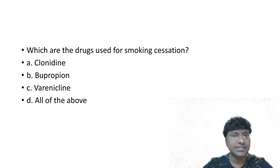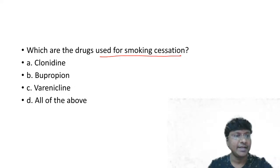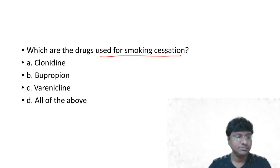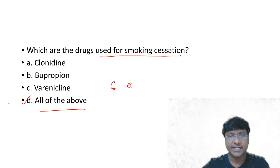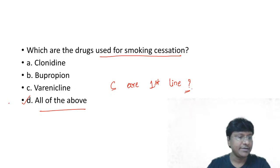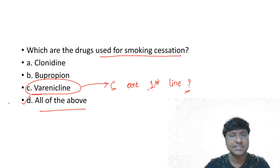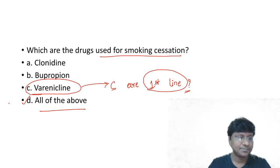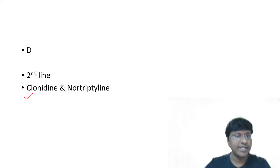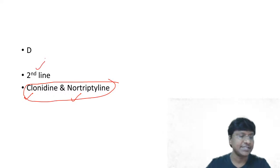Which drugs are used for smoking cessation - clonidine, bupropion, varenicline, or all of the above? The answer is all of the above. However, varenicline is the first-line agent for smoking cessation, whereas clonidine and nortriptyline are considered second-line agents for smoking cessation.